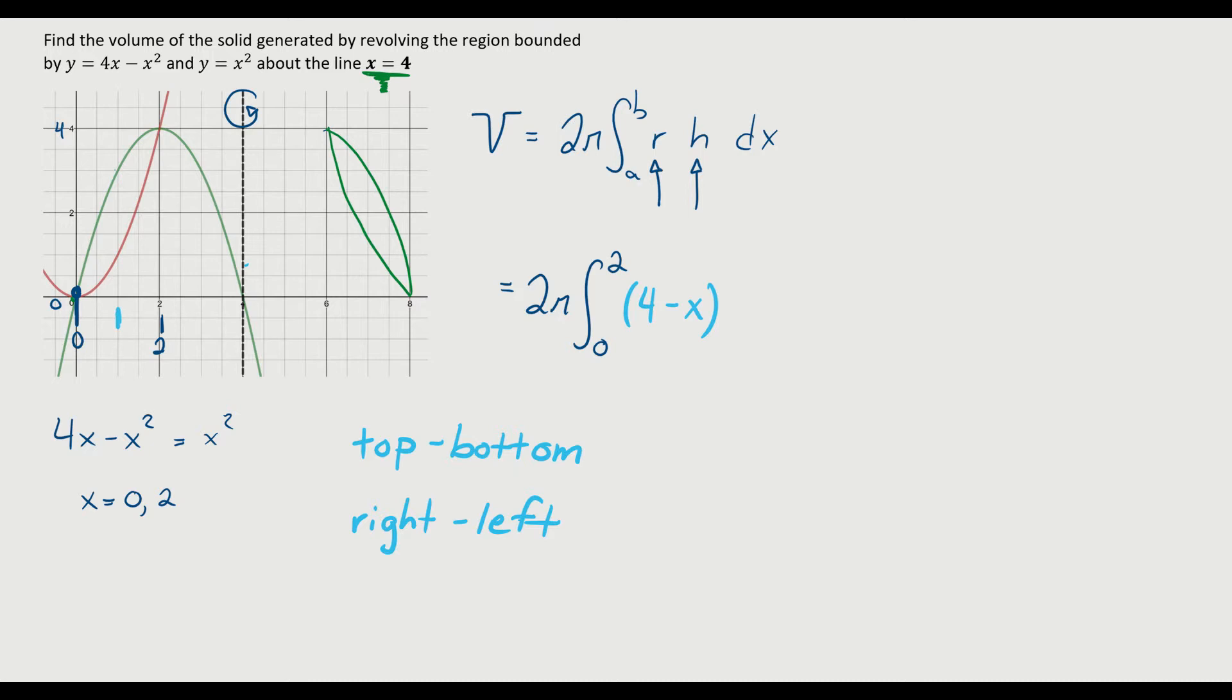And then the height, the height of one of these cylinders, one of these shells, it's bouncing between the two curves. So again, you go with that idea of top minus bottom or right minus left. Because we got top minus bottom, we're going to go 4x minus x squared, which is my top curve, minus my bottom curve of x squared. And then the thickness of each of those shells, dx.